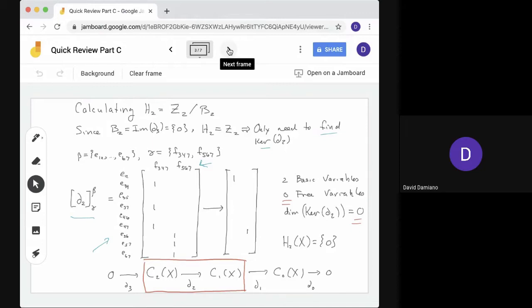Now for the entries, we look at F3, 4, 7. We need to calculate the boundary of F3, 4, 7, but we know that equals E3, 4, E3, 7, and E4, 7. So we see three ones in the first column. All the other entries are zero. They're not written out. Similarly for F5, 6, 7. We see boundary entries E5, 6, E5, 7, and E6, 7. That's the boundary matrix. We want to row reduce it.